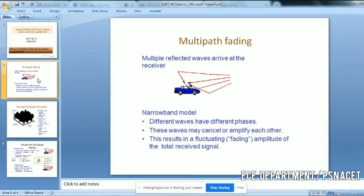When we talk about the narrowband model, different waves have different phases because of the distance. These waves may cancel or amplify each other. This results in a faded signal or fluctuating amplitude signal. At the receiving side, it may combine constructively or destructively.